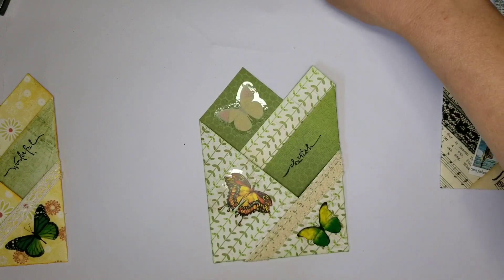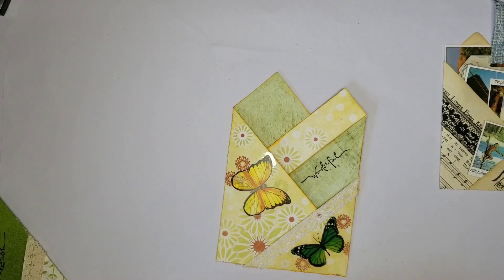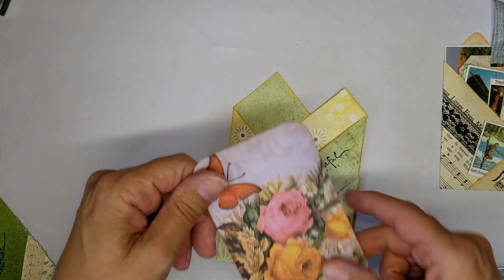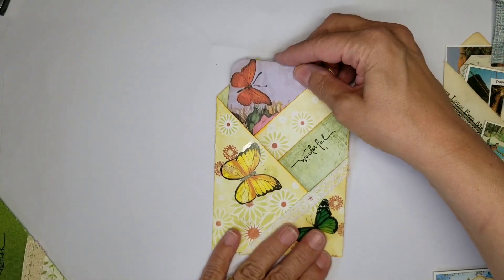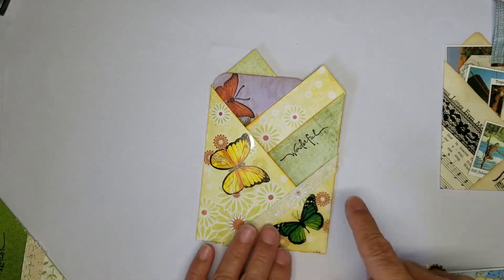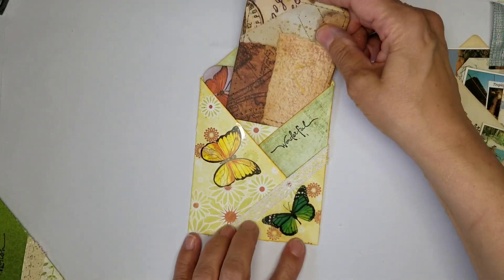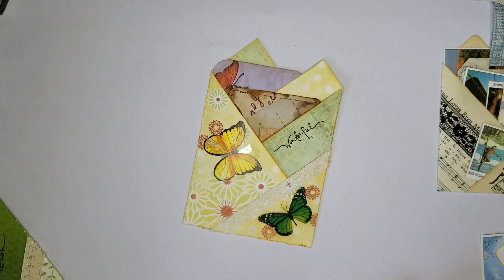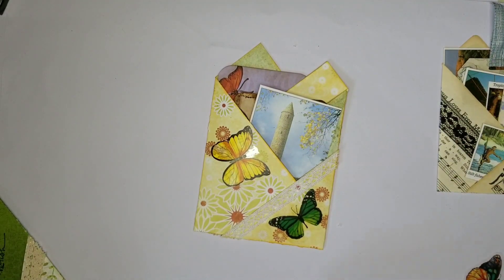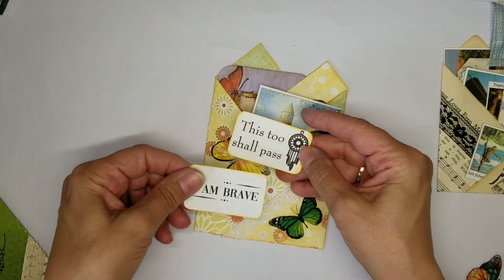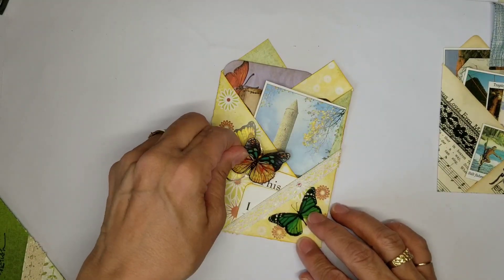Now the second one. A couple of these little things I made myself. These last two pockets I did do a little inking around the edges. A little journal card. And a little extra butterfly tucked in here.